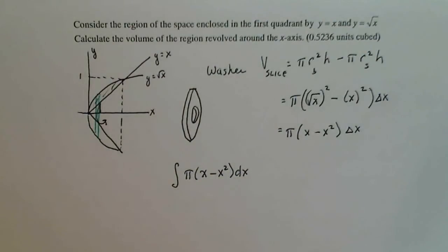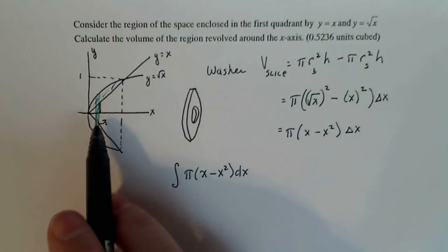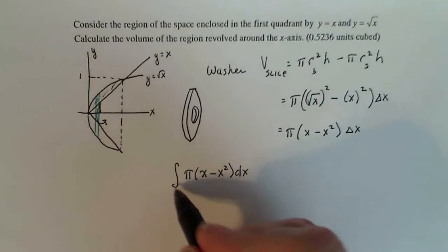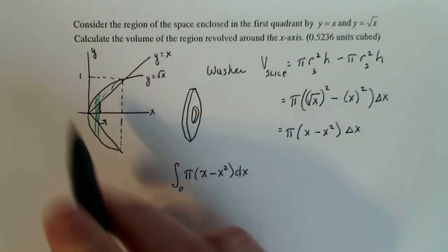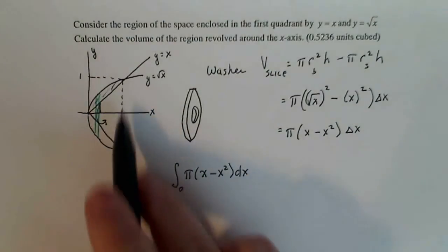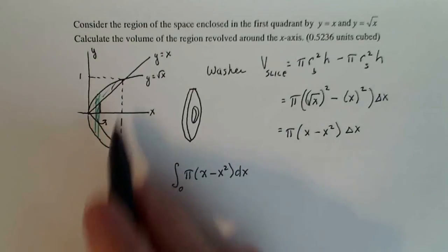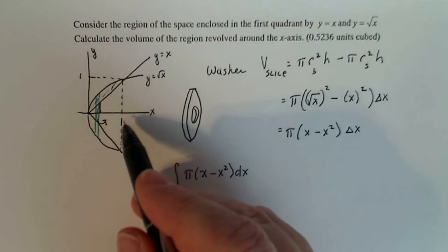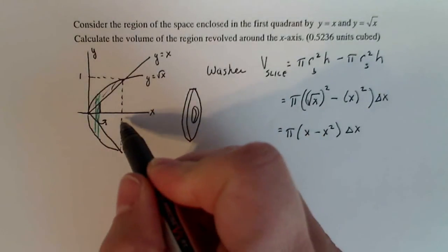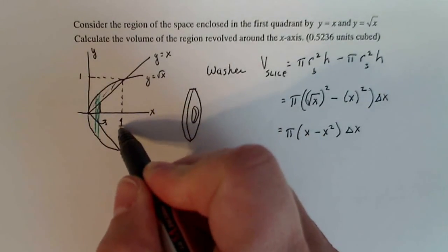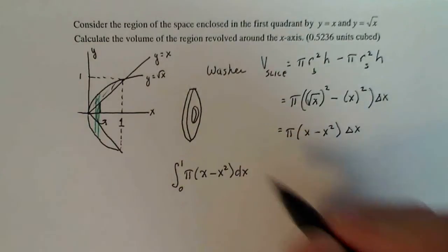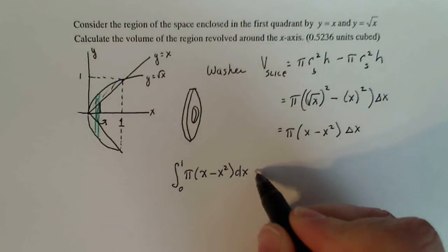The interval over which I'm working: the slice furthest to the left will be when x is zero, and the slice furthest to the right is when x is one. So that's what I'm going to integrate — it's a really easy thing to integrate.